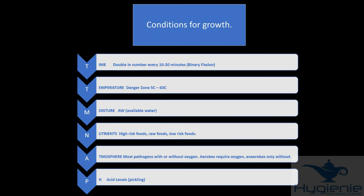Time. Bacteria double in number every 10 to 20 minutes and this is known as binary fission. Temperature. The danger zone is between 5 and 63 degrees C. Moisture is available water for bacteria. Nutrients. High risk foods have the right proteins for bacterial growth. We also think in terms of raw foods which are generally a source of bacteria. And low risk foods on which bacteria can't easily grow. But we do need to prevent contamination.